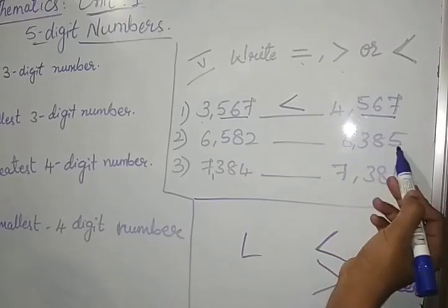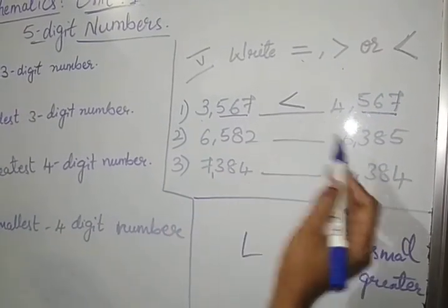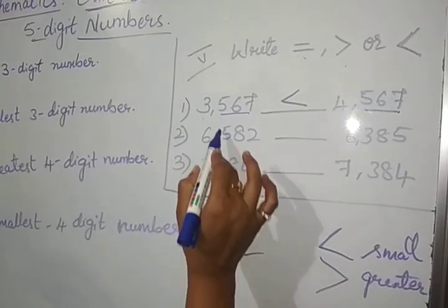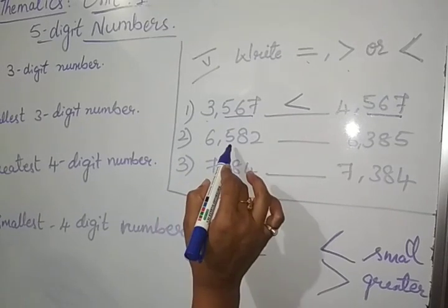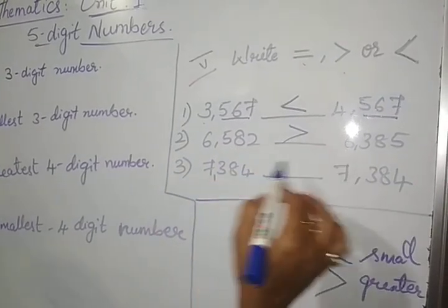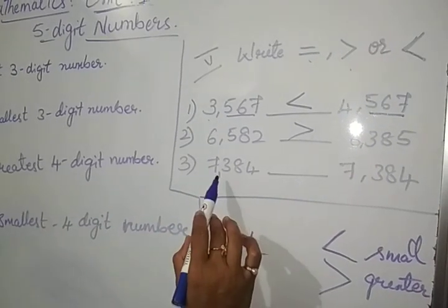Here, 6,582, 6,385, different. 1000 place, 6,000, 6,000, then go for 100 place, 5 and 3, so this is greater. 6,582 is greater than 6,385.